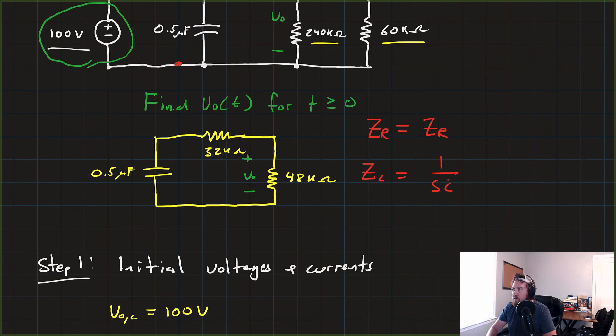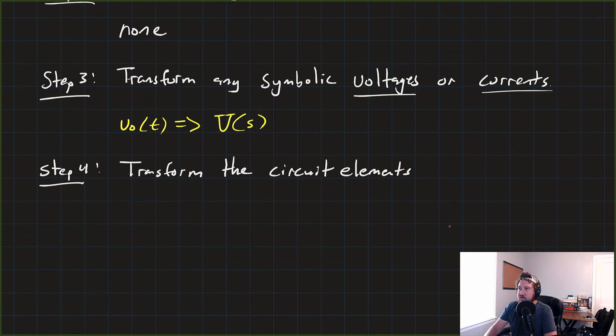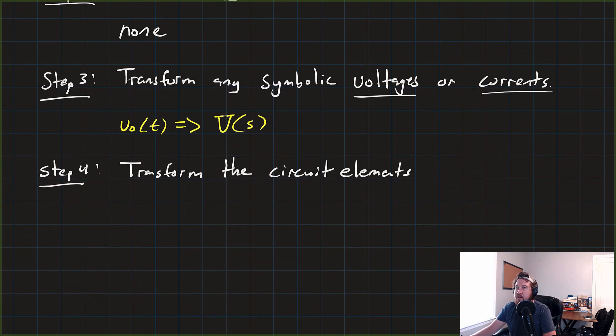But Zc is going to become 1 over SC. But specifically, remember that the capacitor is also going to tack on that voltage source, that 100 ohm, or excuse me, 100 volt over S, 100 volt over, 100 volts initial voltage. So our V for C, remember, is equal to the current over SC. So there's our 1 over SC impedance plus the V-naught over S. So we're actually going to add that voltage source into the circuit. So we're going to get a guy that looks like this.